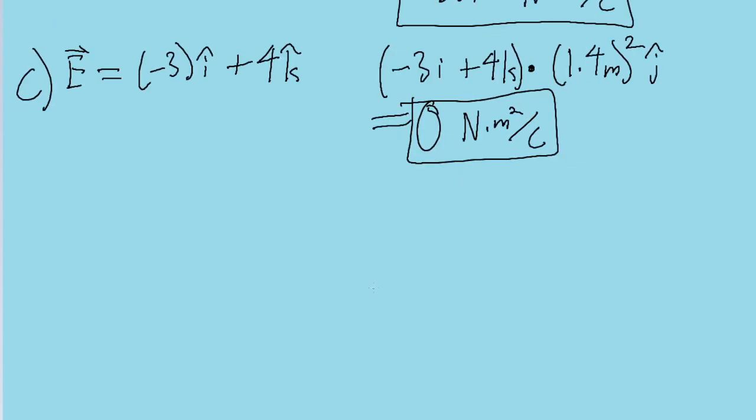The final part of the problem, part d, asks about the flux through the entire cube. This part of the problem is actually a lot easier than it might first look or sound, because there's a very helpful rule to remember. And if we have a closed surface, which means a surface that has no openings, and the electric field strength is constant, which it is in this case,